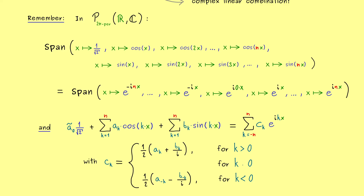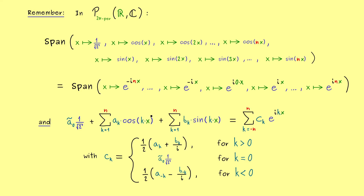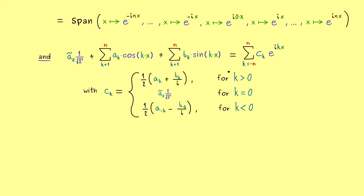Only one case remains — the constant function. For the constant function, we don't need Euler's formula, which means the coefficient is exactly the same. Hence c0 is exactly the same as on the left hand side, which we write as ã0 times 1 over the square root of 2. Please recall that we had to choose the constant function as 1 over the square root of 2 because we wanted to have an orthonormal basis. For the representation with exponential functions, we don't have to do such a strange normalization — so writing down an ONB with the exponential functions is much simpler.